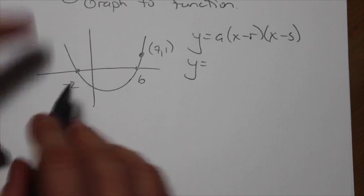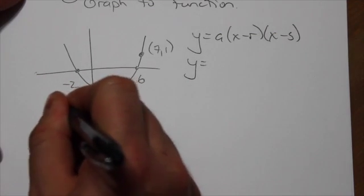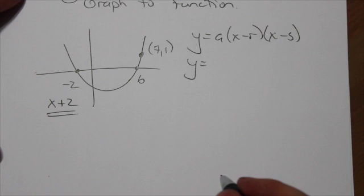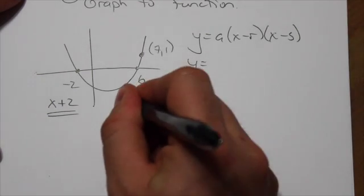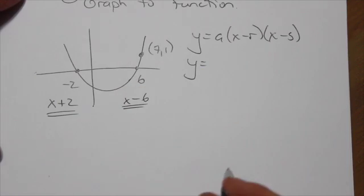when you see negative 2 as an x-intercept, that implies the factor x plus 2. And if I see positive 6 as an x-intercept, that implies the factor x minus 6.